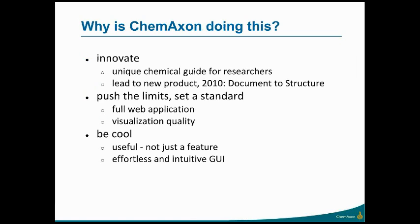You might be asking why is ChemAxon doing this. We always had the urge to try the latest stuff and innovate with it. Over time we put together a pretty unique application that is actually acting as a chemical guide for researchers. As a byproduct it also led to new products — for example in 2010 a tool called Document Structure was released out of the experience we had with ChemAxon. This was our first full web application and it introduced some pretty new visualization tricks that really set the standards for our future products.